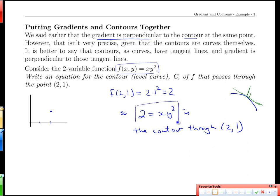So 2 equals xy squared is the contour through the point (2,1). There is an equation for a contour, level curve. All the points that satisfy this have height 2, and the point (2,1) also has height 2.